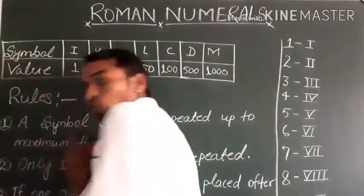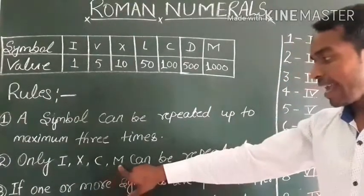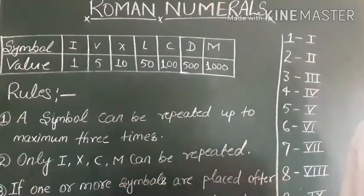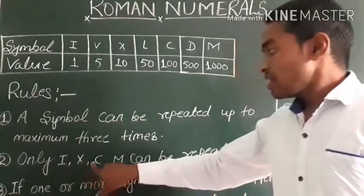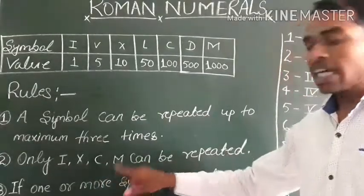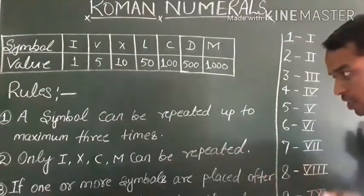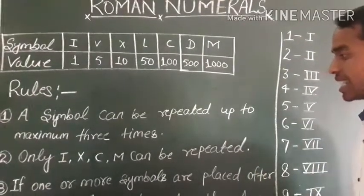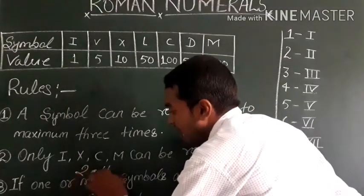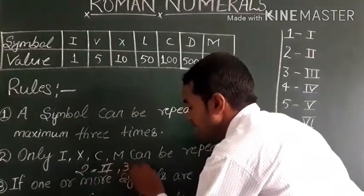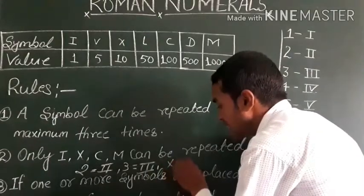Rule number 2: Only I, X, C, and M can be repeated. Symbols like V, L, and D cannot be repeated. So among all Roman numeral symbols, only I, X, C, and M are allowed to repeat.